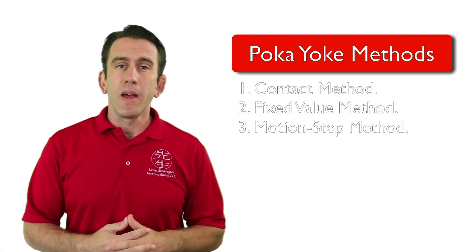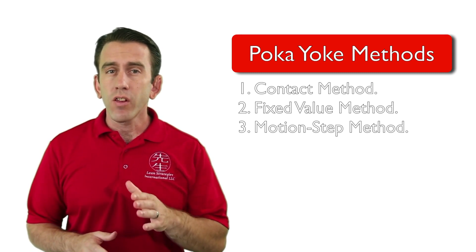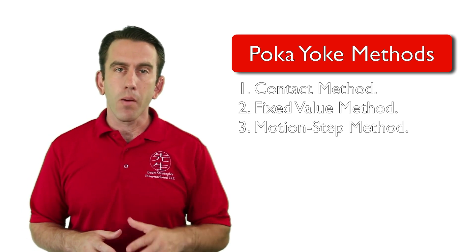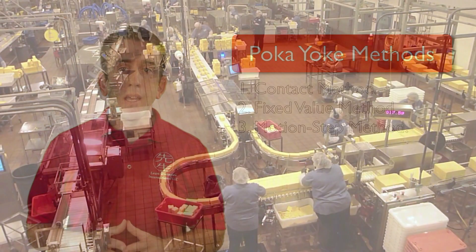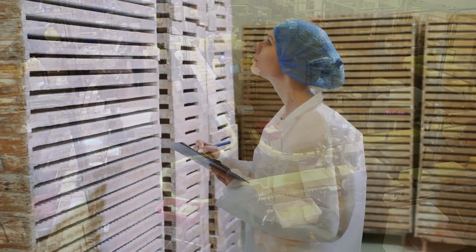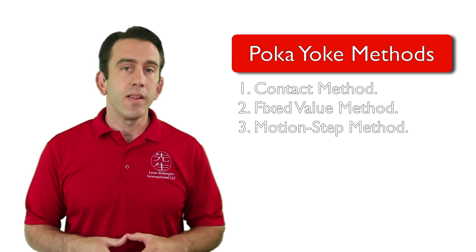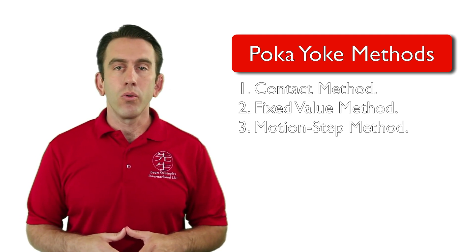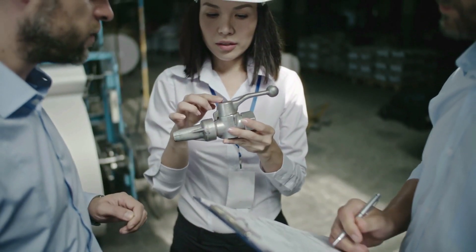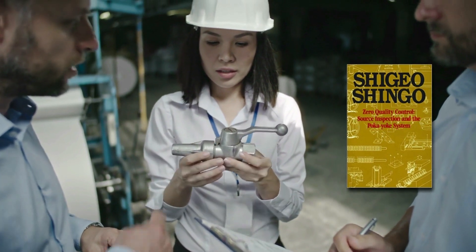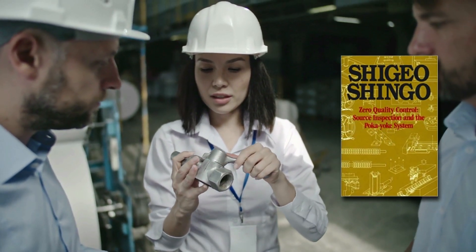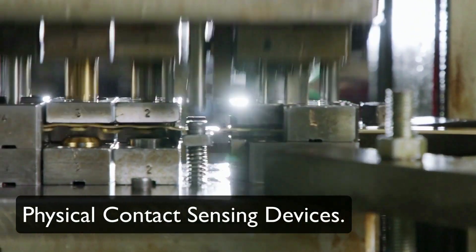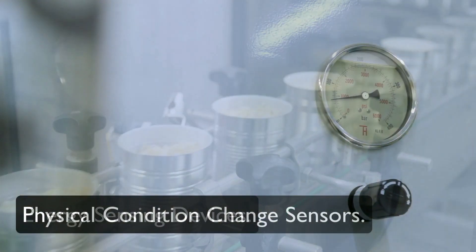The three most well-known methods used in Poka-Yoke are the contact method, fixed value method, and the motion step or sequence method. Each of these three methods can be used to warn an operator or to control a process. They can also be used at the source for inspection or in the informative inspection format. But how do these different methods sense that an error may occur? Typically, anyone trying to mistake-proof a process — especially following Dr. Shingo's suggestions in the book Zero Quality Control, Source Inspection and the Poka-Yoke Method — will use one of three types of sensing devices.